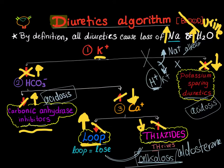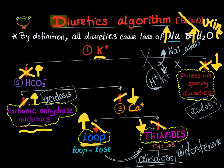With thiazide diuretics, you will have decreased calcium in the urine because thiazide makes calcium thrive — calcium will be high in the blood but low in the urine. So this lecture is exactly the opposite of the previous one, because today we are looking at electrolytes in the urine, not in the blood.